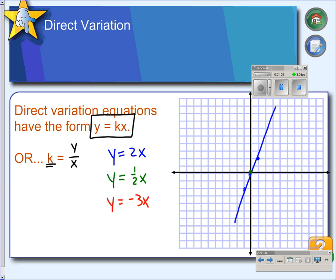The green one also passes through the origin and it has a slope of 1 half. And the red one passes through the origin, but it has a negative slope. And so you can see the graphs all pass through the origin and they are straight lines.